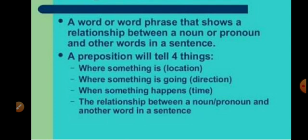Second: where something is going — direction बताता है कि वो कहाँ जा रहा है. Then when something happens — timing बताता है कब हुआ. And the relationship between a noun, pronoun and other words in a sentence — उनके बीच के relationship के बारे में show कराता है.